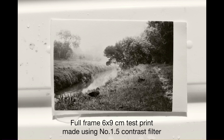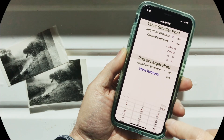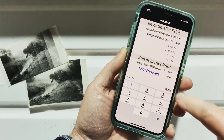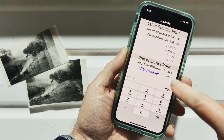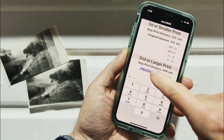Here's a small whole-frame six by nine centimeter test print — about the size of a credit card. Due to the extra film development, I'm getting good print contrast with just a low contrast grade one and a half printing filter, and the picture isn't printing dark or muddy. I like this exposure level, so now I'll compute the exposure time needed to make a matching larger print that's a bit bigger than A4.